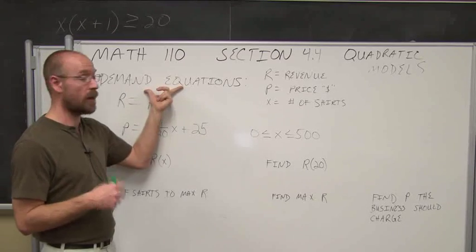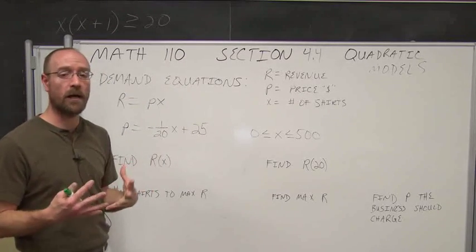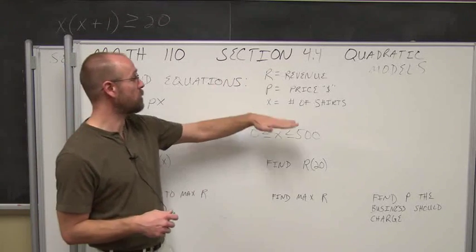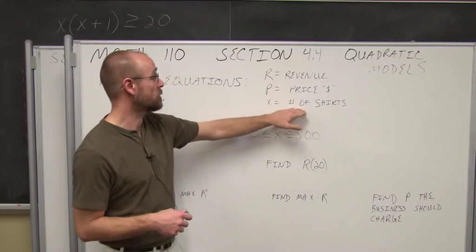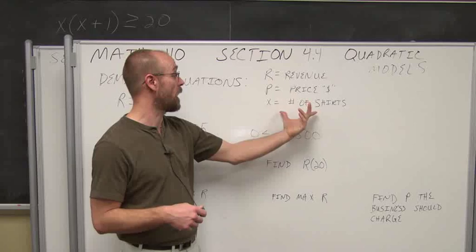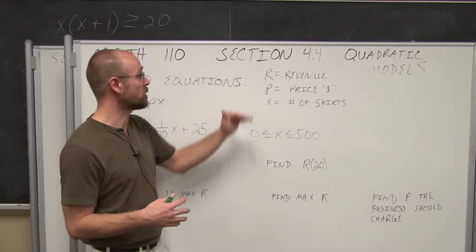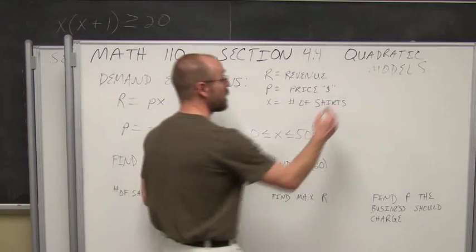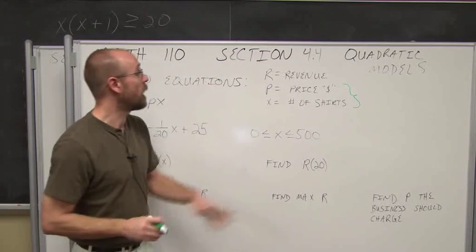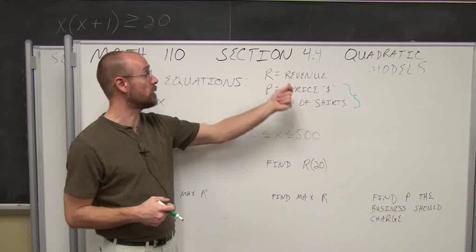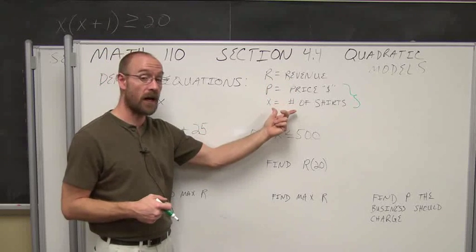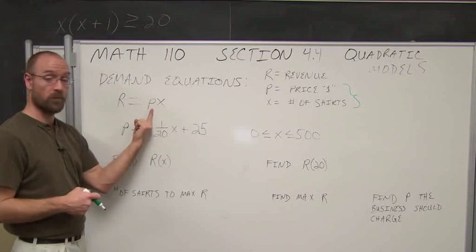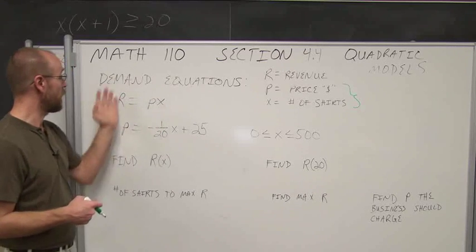One of these applications in economics is the demand equation. A lot of businesses deal with supply and demand. In the example we're going to look at, x is our supply — the number of shirts. Demand is defined as the relationship between the price we need to charge and the number of products we have. Revenue is how much money we're going to make, and revenue is essentially the price we charge times the number of items we sell.